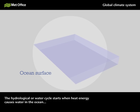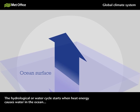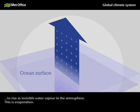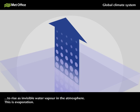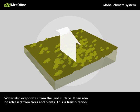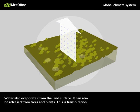The hydrological or water cycle starts when heat energy causes water in the ocean to rise as invisible water vapour in the atmosphere. This is evaporation. Water also evaporates from the land surface, and it can also be released from trees and plants.